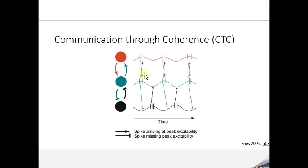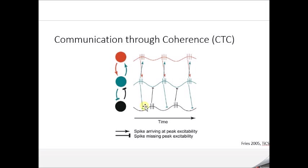The hypothesis is that if this action potential causes synaptic input into the red region during its excitable phase, it can better influence the neural computation in that region. However, the blue and black oscillations are out of sync, such that when the blue oscillation fires action potentials, these will reach the synapse in the black population during its low excitability phase. With a lot of inhibition during that phase, the excitatory input won't yield an action potential — it's essentially not processed.